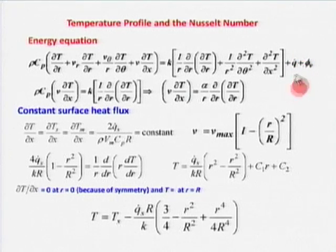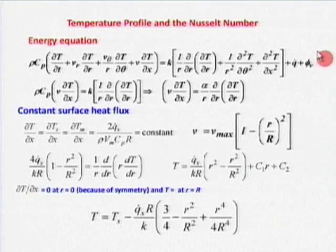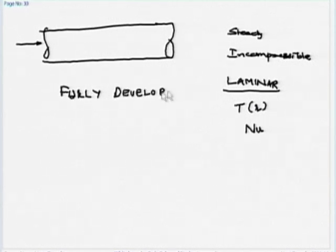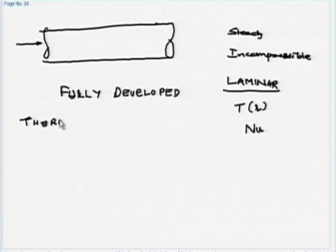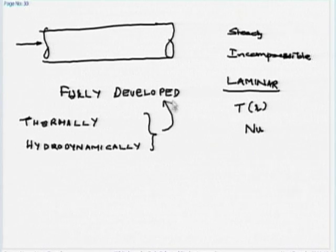There is no volumetric heat generation, so Q_dot equals zero. Viscous dissipation is not present because the flow is assumed incompressible. We take another assumption: the flow is fully developed — both in hydrodynamic and thermal sense.